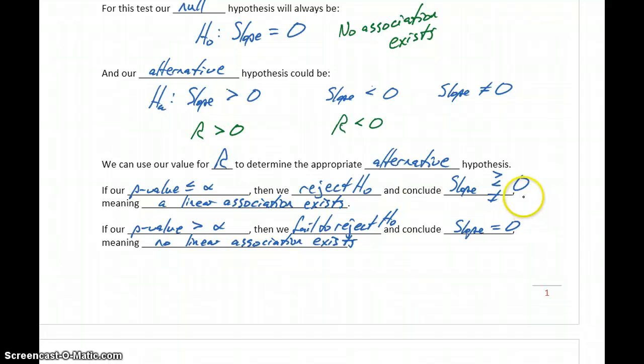If we reject the null hypothesis, we'll keep going and try to verify the next condition. But if we fail to reject the null hypothesis and conclude no linear association exists, then at that point we're already concluding the model is not valid, and we can stop this entire process. There's no point in constructing the model or verifying the normality of residuals because the first condition has failed.